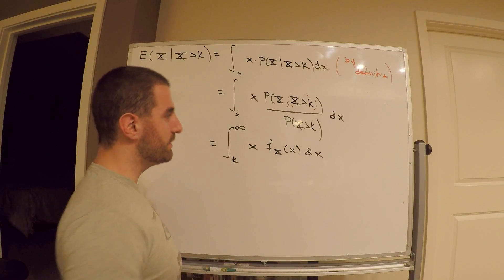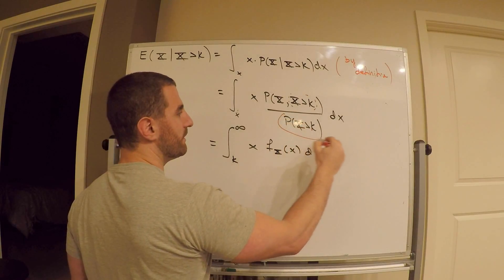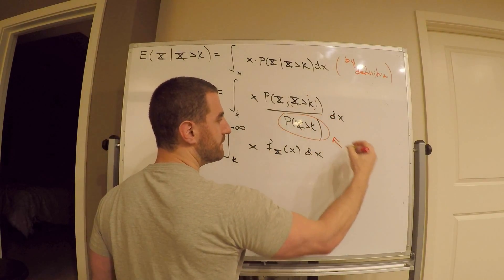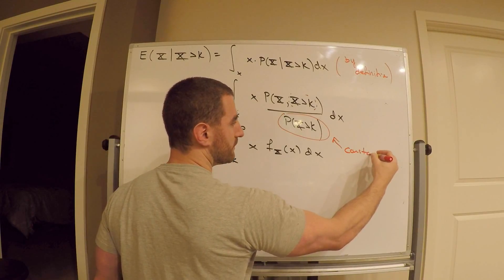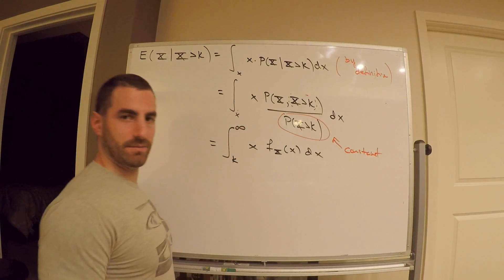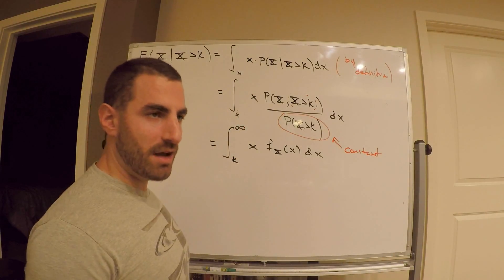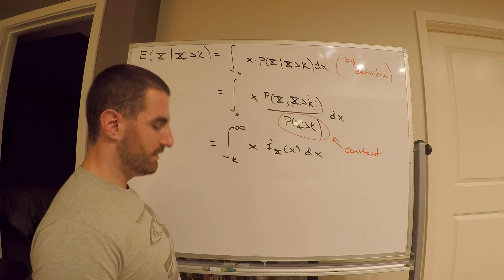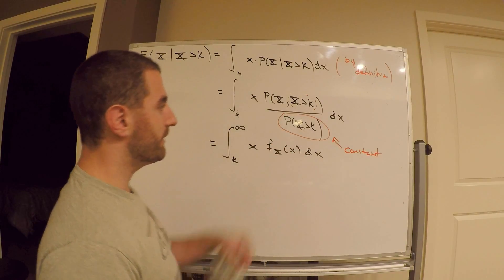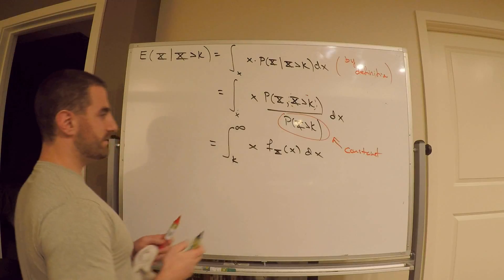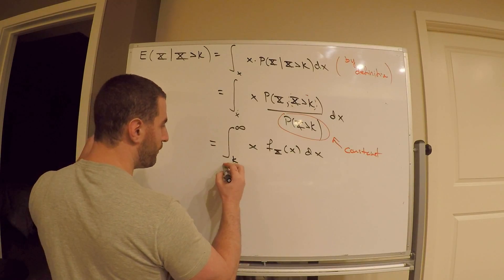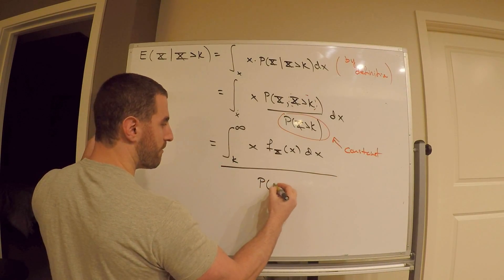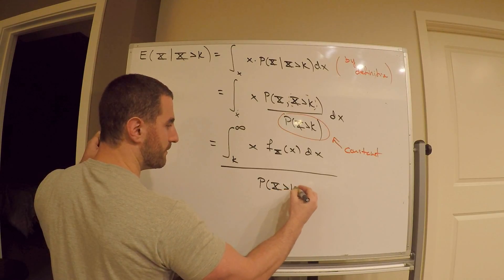Let me just say something right now. You absolutely need to know this if you have your calculus skills in order. This is a constant — it's a number. Less than 1 and greater than 0. It's a probability. Factor it out. k is a constant. So this is equal to the whole thing divided by probability x greater than k.